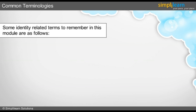Some identity related terms to remember are as follows. Identity is the means by which a user, device, or code entity is identified as unique. Identifier is another term related to identity, referring to the means by which the identity is asserted.